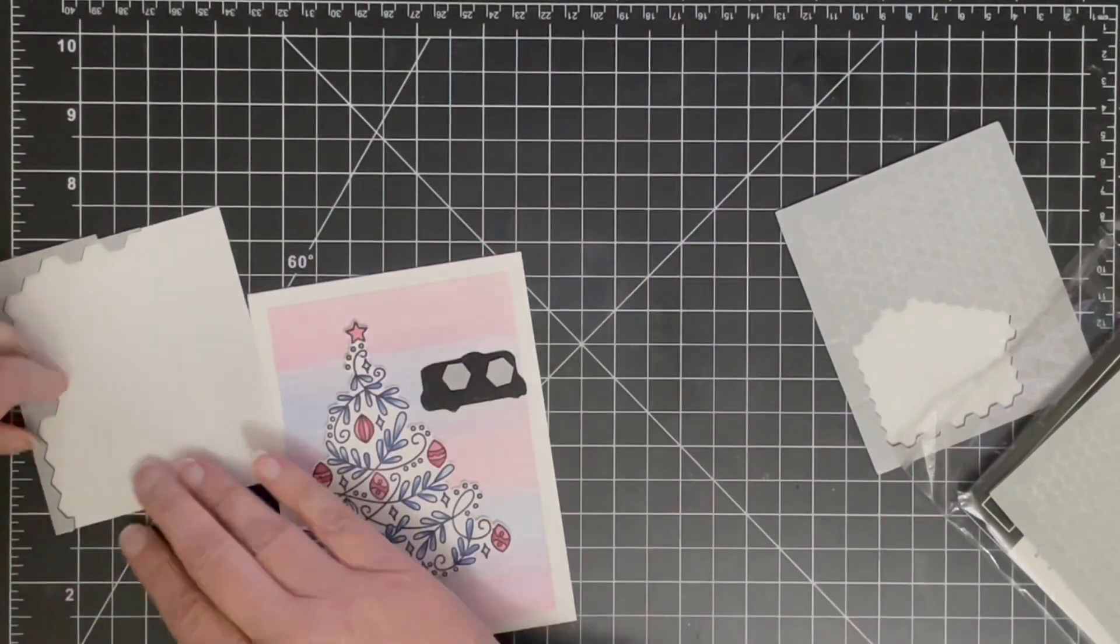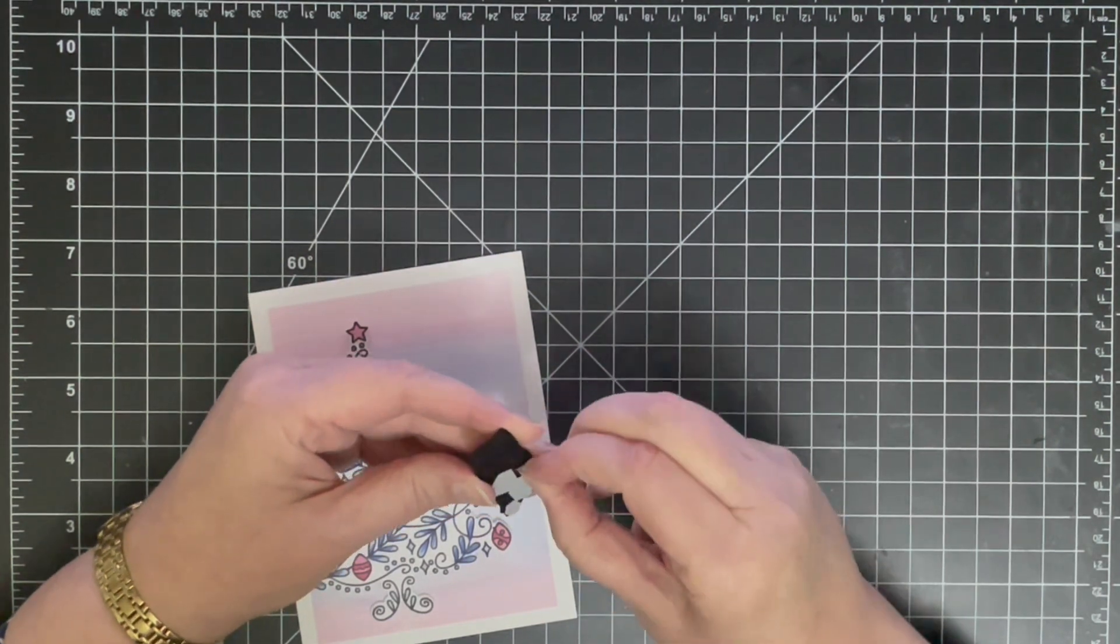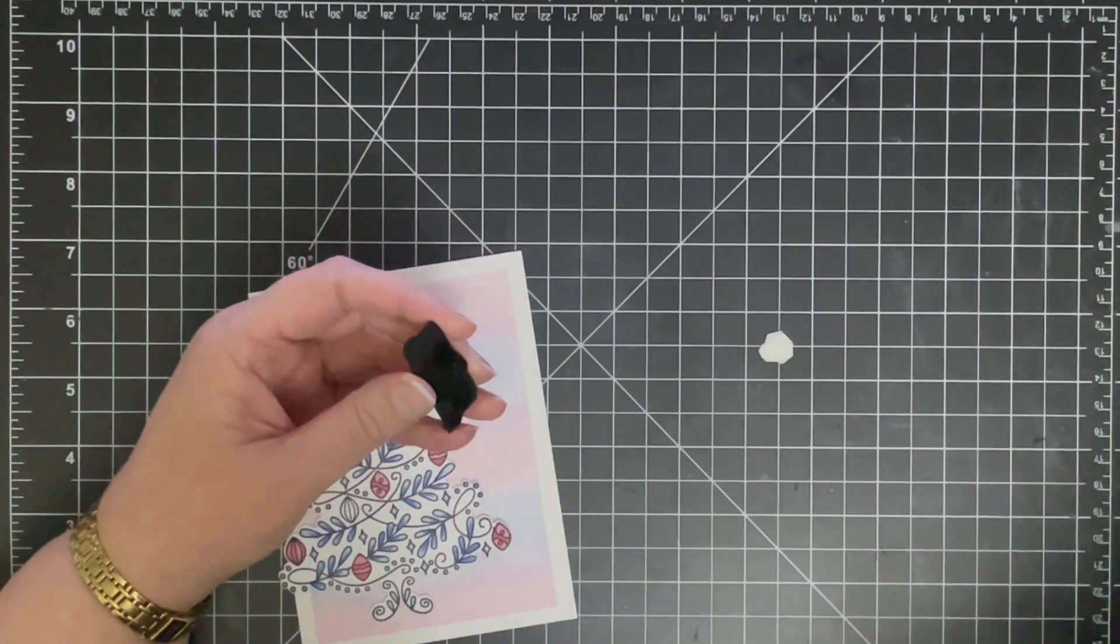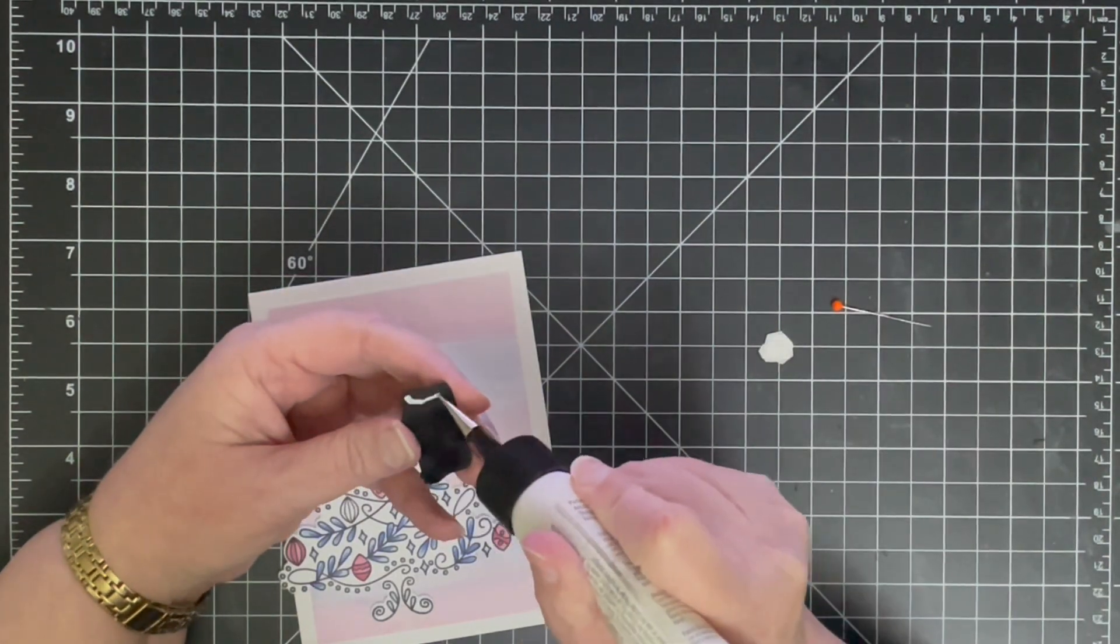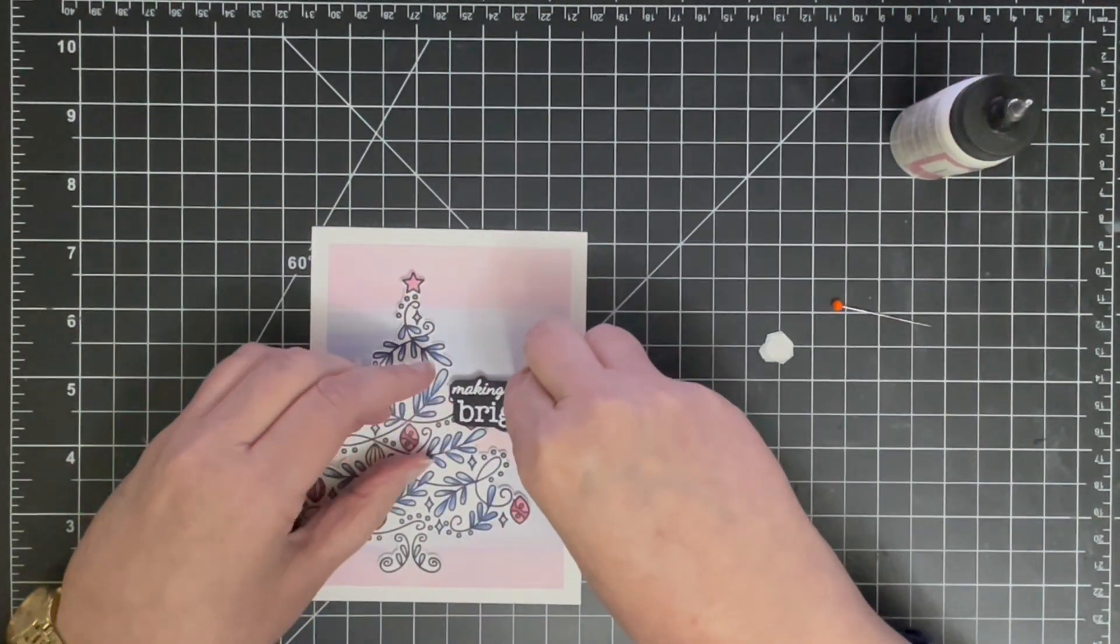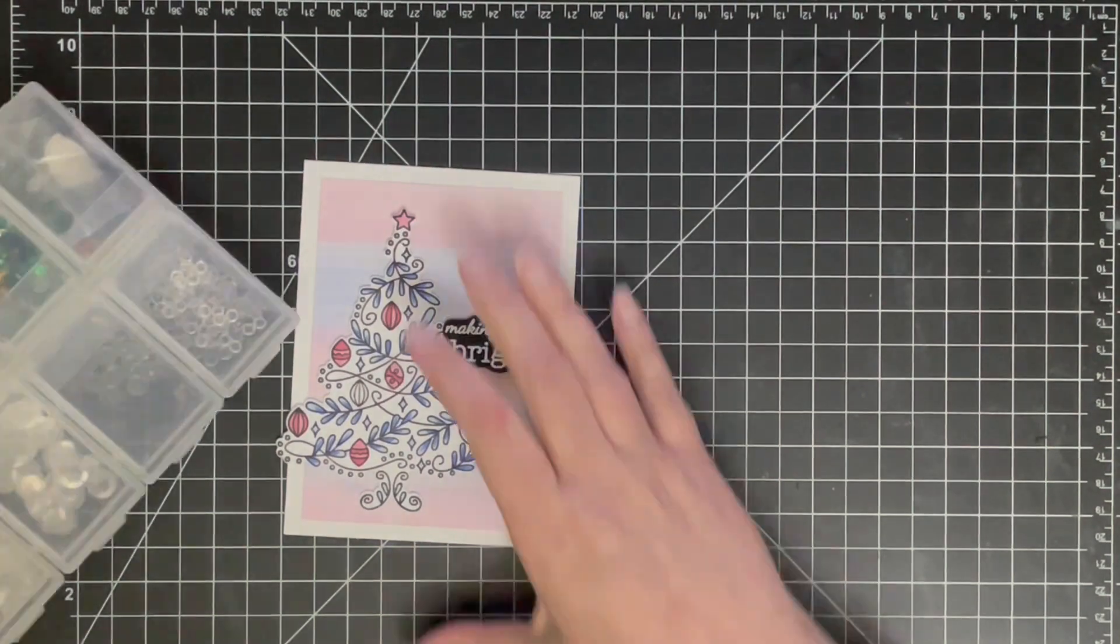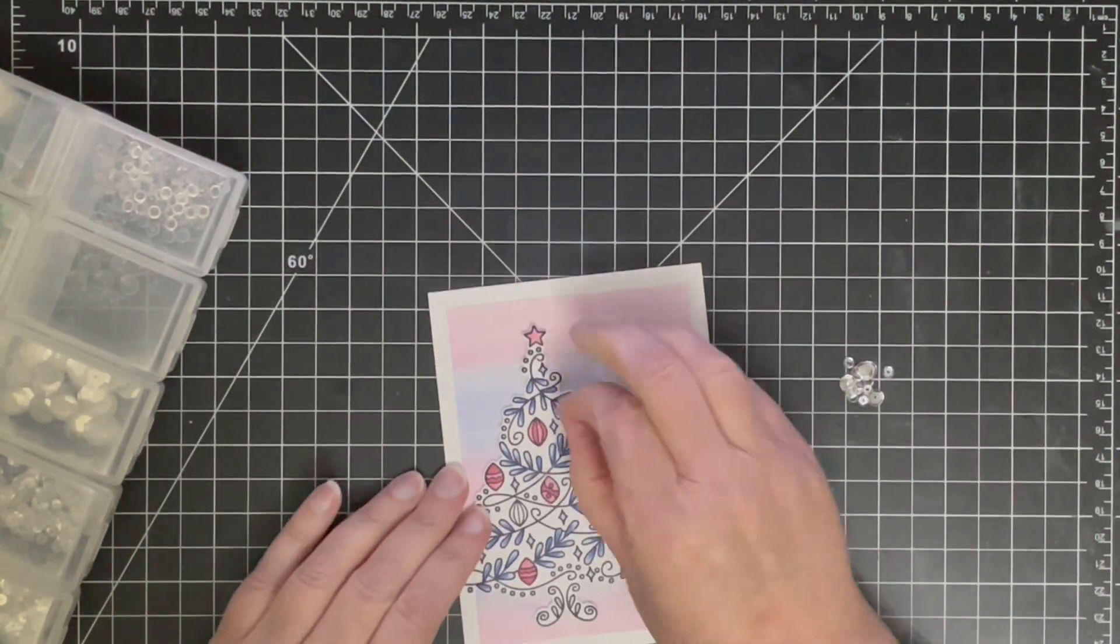And also my envelopes are C6 so this will fit perfectly well in a C6 envelope. Okay so I've added some little foam adhesive pieces on the back of this sentiment but part of the sentiment is going to be popped up on top of that tree so I'm just adding some liquid glue just to that part and adhering that nice and straight.